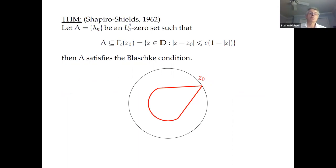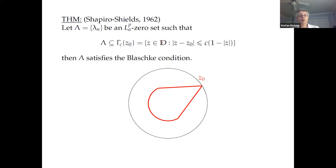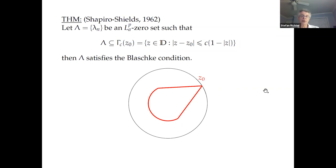Shapiro and Shields in a paper from the early 1960s also mentioned in Tom's talk, proved another type of condition on zero sets for Bergman spaces. Namely, if you assume all the zeros of your Bergman function lie in a non-tangential approach region — a Stolz region Γ_c, an ice cream cone-shaped region with vertex at z_0 on the unit circle and parameter c controlling the opening width — then the sequence must satisfy the Blaschke condition.